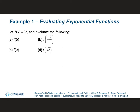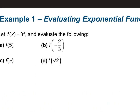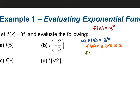If we look at example a, we have f of 5. Our f of x is 3 to the power of x. So if f of x is 3 to the power of x, for example a we're doing f of 5. This is going to give us 3 to the power of 5. That's 3 times itself 5 times. If you want to use your calculator, you can. You get that f of 5 is equal to 243.